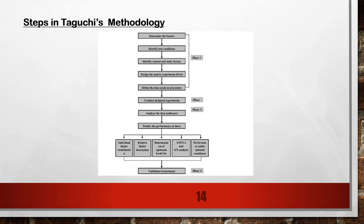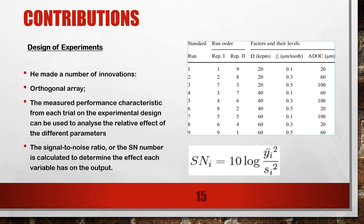We will take into consideration the steps in Taguchi's methodology. We have the different phases as outlined in the diagram shown. You will move from phase one to phase four, where you start determining the factors straight into validation of the experiment.